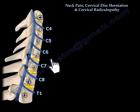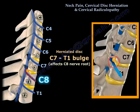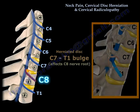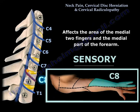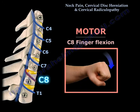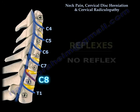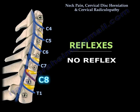Disc herniation or disc bulge between C7 and T1 will definitely affect the C8 nerve root. The sensory area affected will be the medial two fingers and the medial part of the forearm, as shown in the diagram. The motor power affected will be finger flexion. There is no reflex that can be tested for C8.